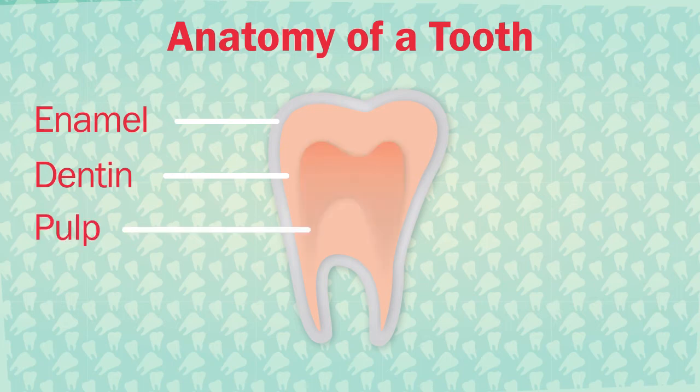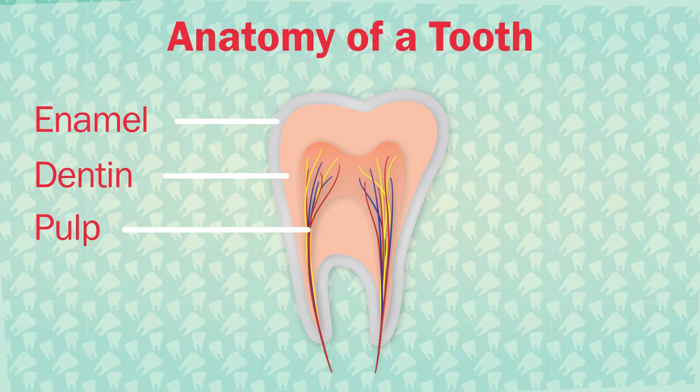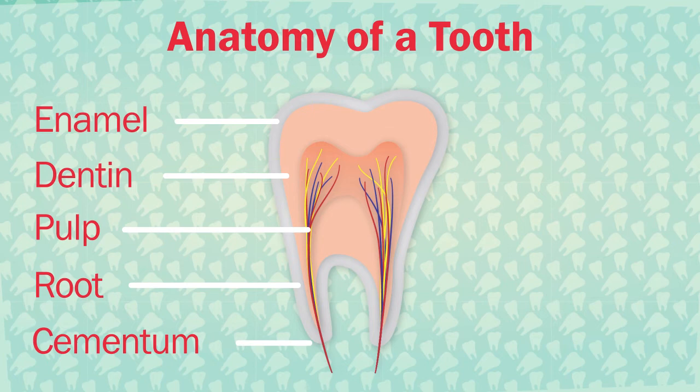The pulp is the soft center of your tooth. It has nerves and blood vessels that connect your tooth to the rest of your body's nerves and blood vessels. The root is the part of a tooth that is below the gums and helps hold your tooth in place. Cementum is the hard covering of your tooth roots.